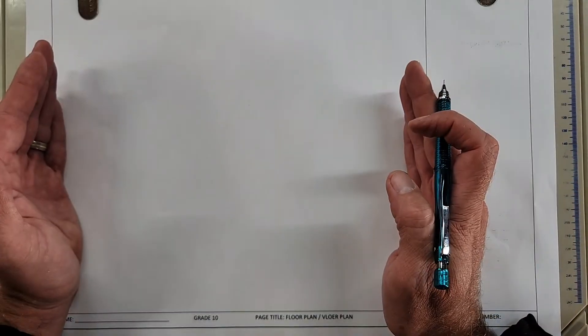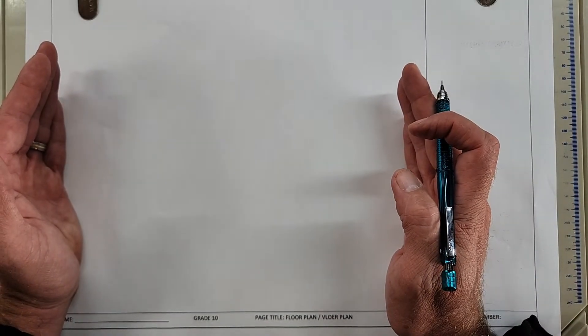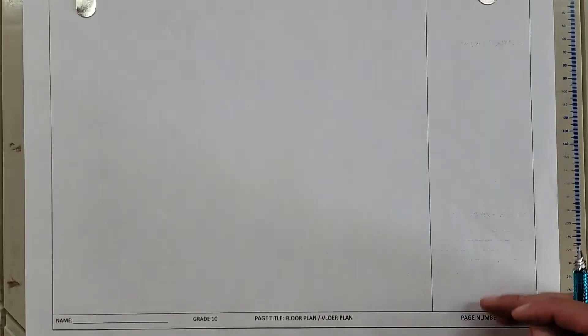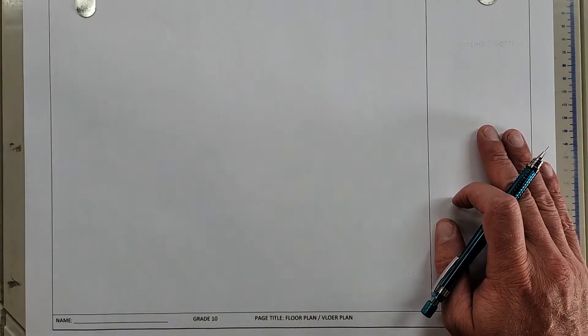On the rest of the page, you are going to draw to scale 1 to 100 your actual granny flat. So let's start off here on the right-hand side with the title block.